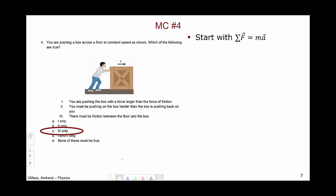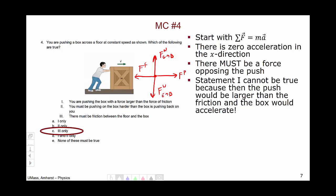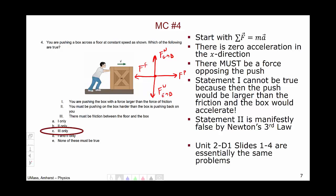We begin with Newton's second law: the sum of the forces must equal mass times acceleration. Because it is constant velocity, there is zero acceleration in the x direction, and therefore there must be a force opposing the push. Drawing a free body diagram, we have the normal from the ground, the weight from the earth, and the push from the person. For zero net force, there must be friction. Statement one cannot be true because if push were larger than friction, the box would accelerate. Statement two is manifestly false by Newton's third law. Unit two, day one, slides one through four are essentially the same type of problem.